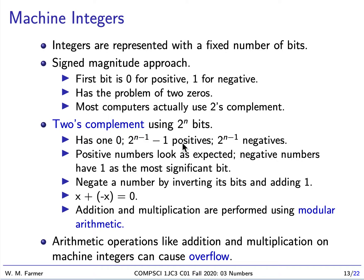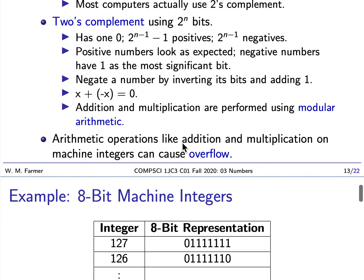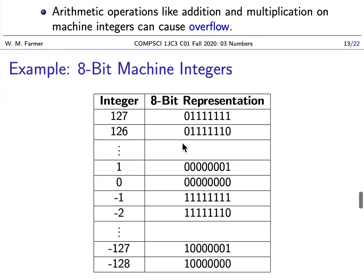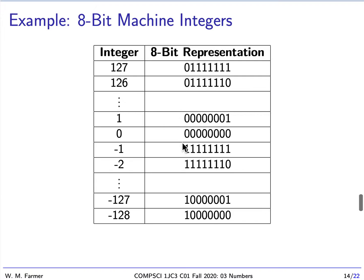I'm going to demonstrate two's complement using 8 bits. In a modern computer today we'd be using 32 or 64 bits, but how 8 bits works is exactly the way how 32 bits work. The difference is with 8 bits we only have 2^8 possible integers, whereas with 32 bits we'd have 2^32 possible integers.